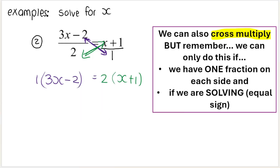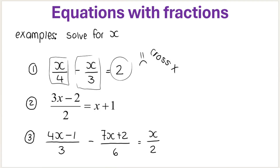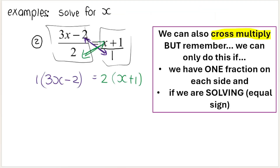Remember, we may only cross multiply if we have one fraction on each side. In our first example, we had 2 fractions on the left-hand side and 1 fraction on the right-hand side, so you can't cross multiply. You could for the second example because we have 1 fraction here and 1 fraction here. In the last one I'll be doing, we cannot cross multiply because there are 2 fractions on the left and 1 on the right. We can only cross multiply if we are solving — if you see an equal sign.